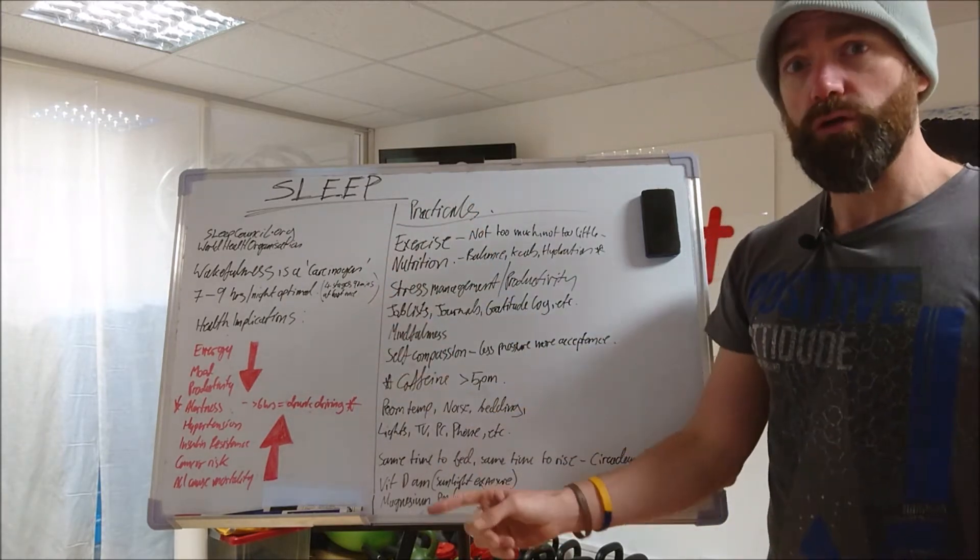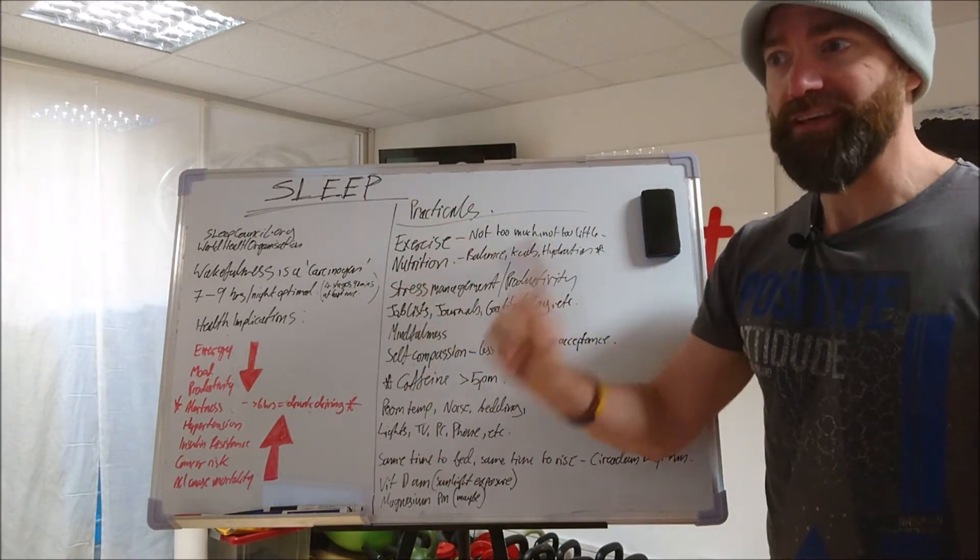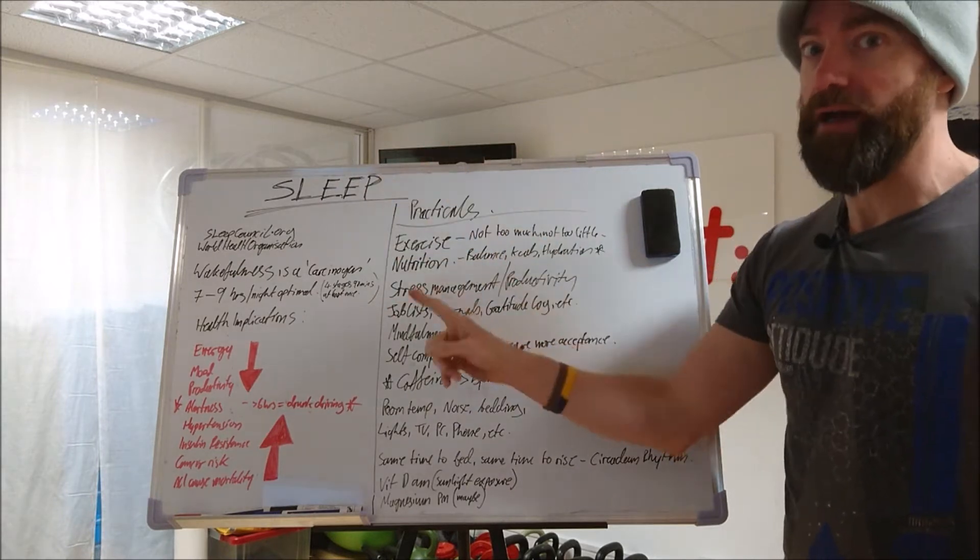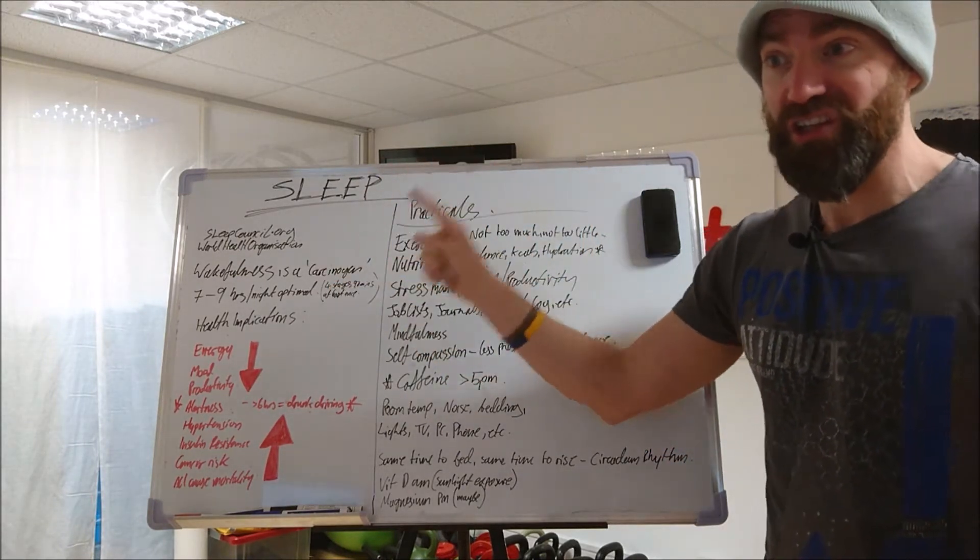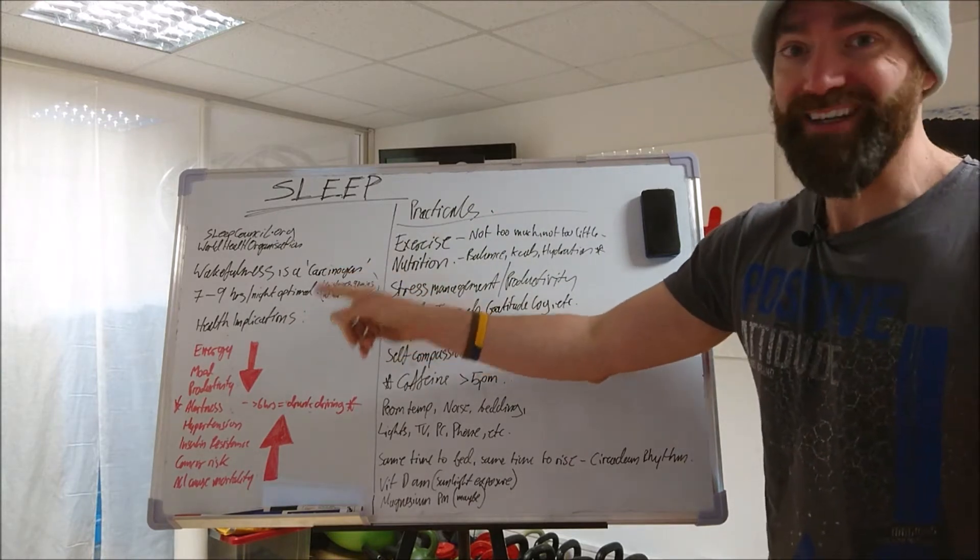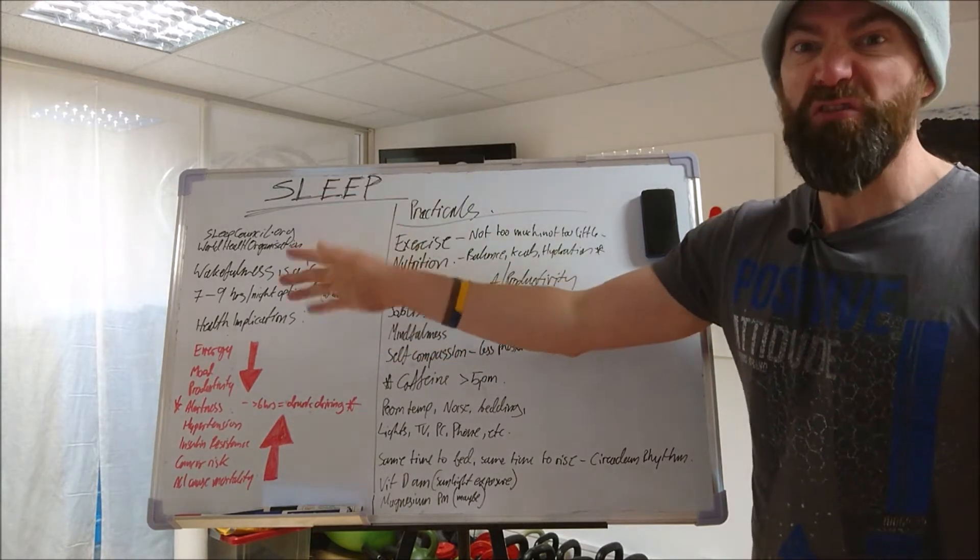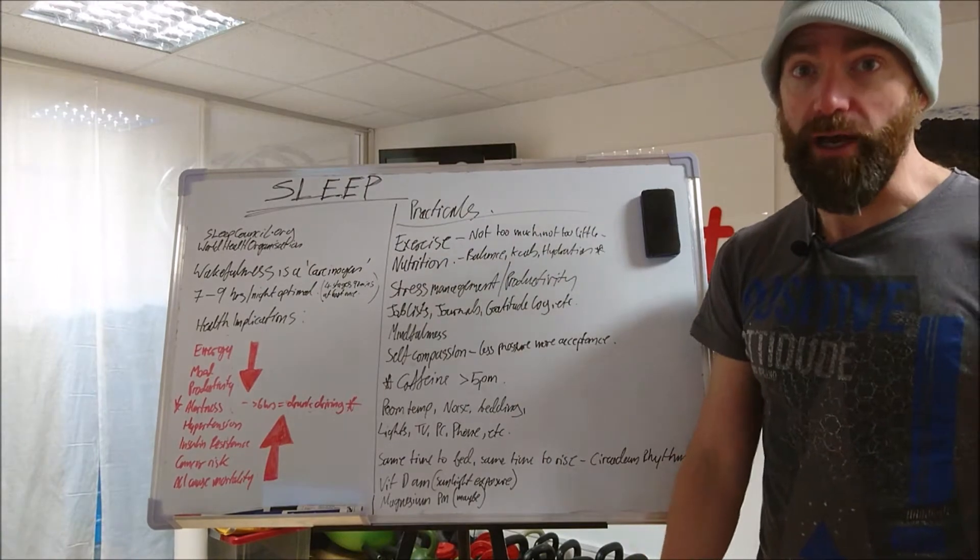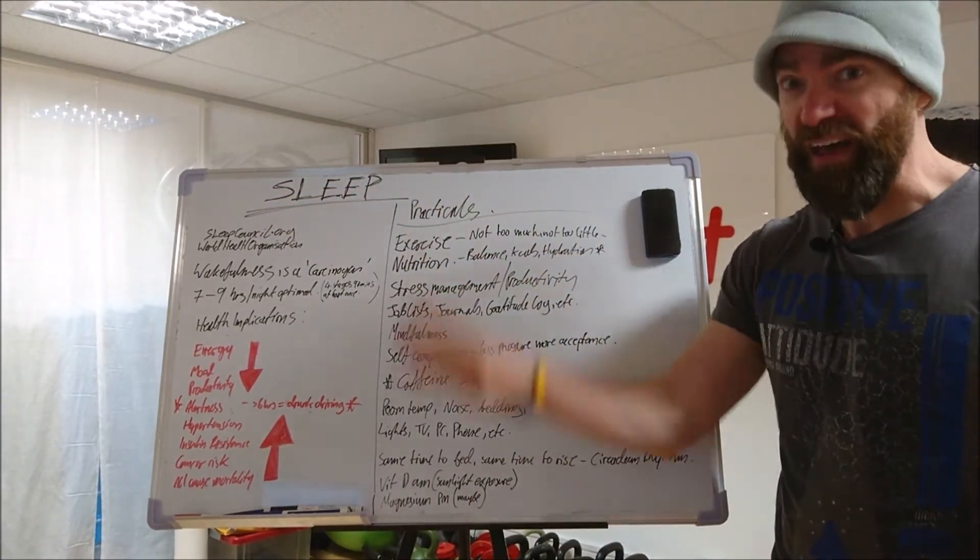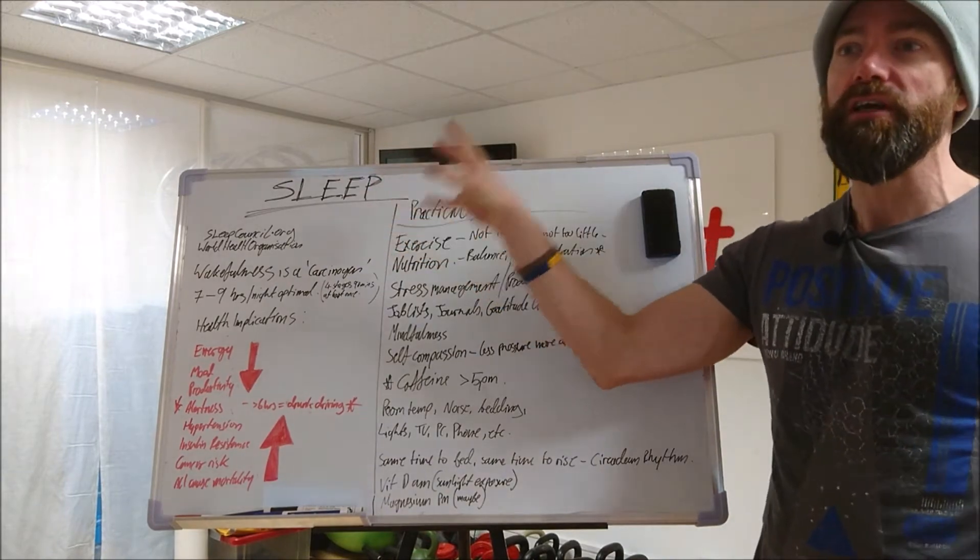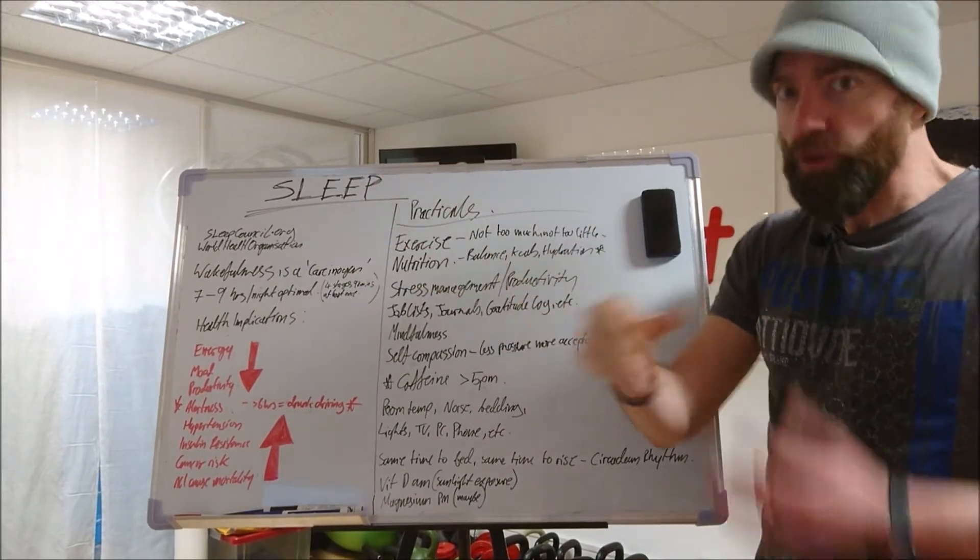If weight loss is your goal, don't forget that 24 hour energy balance includes sleep. So while you're asleep, you can be burning anything between 500 to 800 calories a night, depending on your size and the length of time you're asleep for. Think about that, 500 to 800 calories in a night's sleep doing nothing.